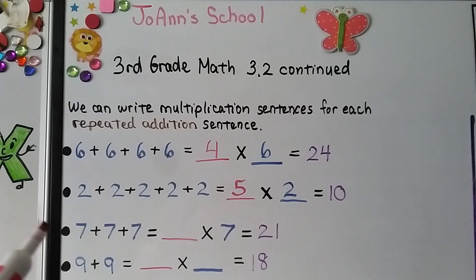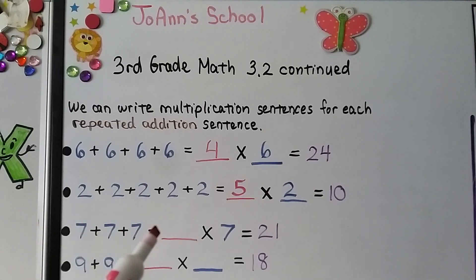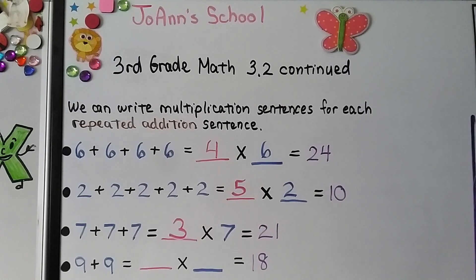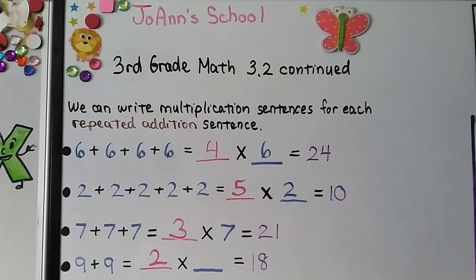Here we have three sevens — that means we have three groups of seven. Three times seven is equal to twenty-one. And here we have two nines — two groups of nine. Two times nine is equal to eighteen.